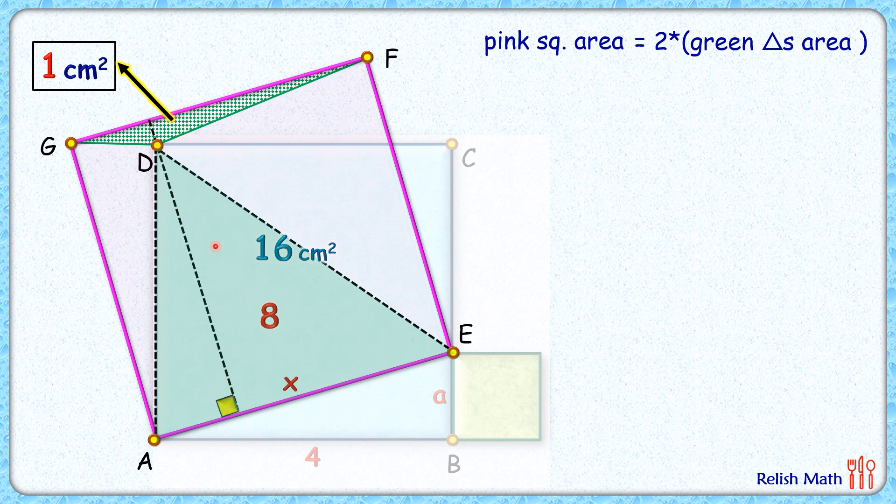Now these two green triangles have got same base as the side length of the square. And their combined height is same as again the side length of the square. So area of these two green triangles that will be half of x times x or half the area of pink square.